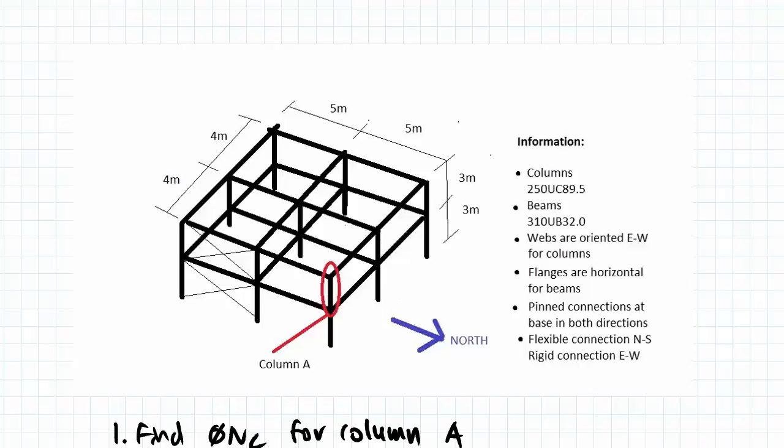An important thing to note is that we have cross bracing on this face going north to south, and we have no bracing going east to west. One thing we also need to know is that the webs are orientated east to west. So our webs go from east to west, across like this.